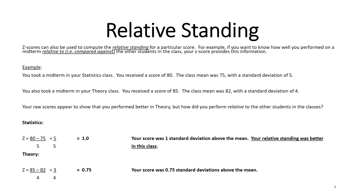But how did you perform relative to the other students in each class? That's why we also need the class mean and standard deviation. Translating raw scores into z-scores: in statistics, your raw score of 80 minus the mean of 75, divided by standard deviation of 5, gives a z-score of 1.0. In theory, your raw score of 85 minus the mean of 82, divided by standard deviation of 4, gives a z-score of 0.75.